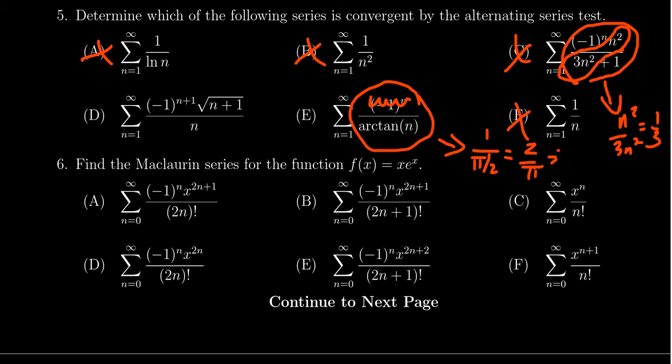But in particular, that thing is not zero. Therefore, this is a divergent series by the test of divergence.